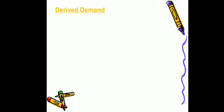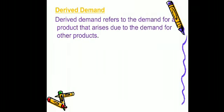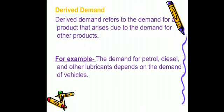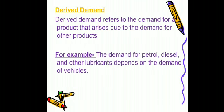Next is derived demand. Derived demand is the demand that arises due to the demand for other products. For example, the demand for petrol, diesel, or other oils depends on the demand of vehicles — if there is demand for vehicles, then there will also be demand for petrol, diesel, and other lubricants and oils.